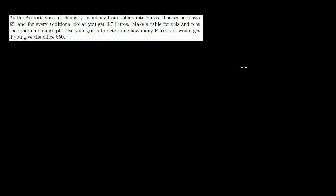Let's do another problem. At the airport, you can change your money from dollars into euros. The service costs $5, and for every additional dollar you get 0.7 euros. Make a table and plot the function on a graph, then use the graph to determine how many euros you'd get for $50. So: euros equals 0.7 times (dollars minus 5). The $5 is the service fee, and for everything left over you get 0.7 euros per dollar.